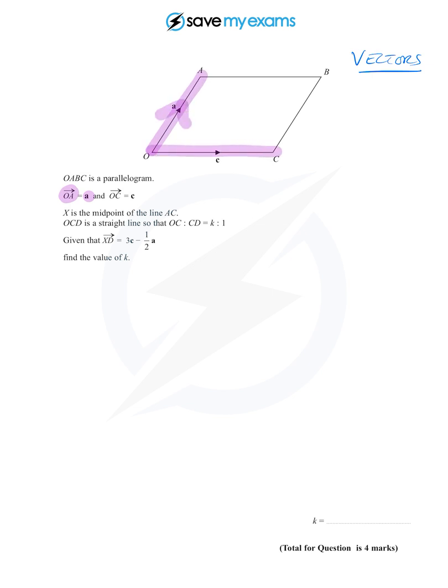It also says O to C is little c. Then it tells us that point X is the midpoint of AC. They haven't actually drawn AC on there, so let's do that ourselves. From A down to C, a nice straight line, there it is, and there's X the midpoint.